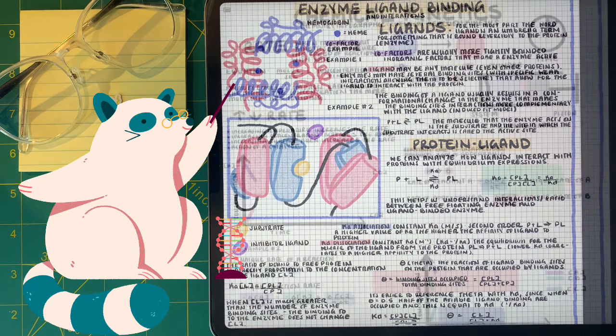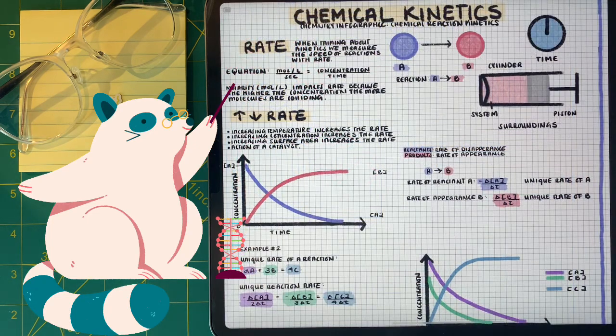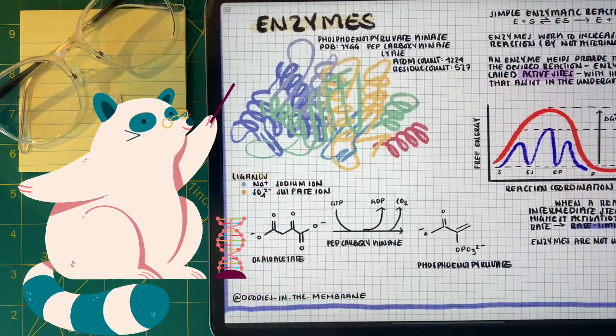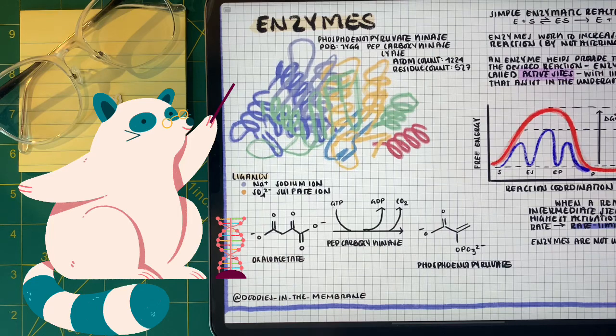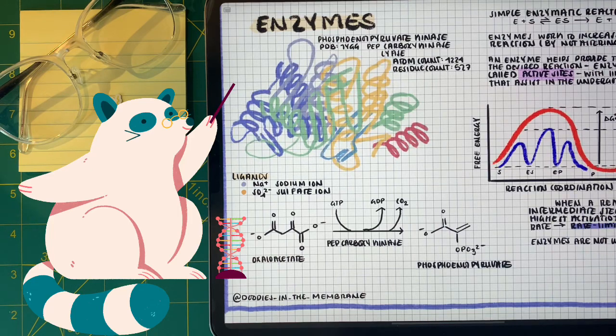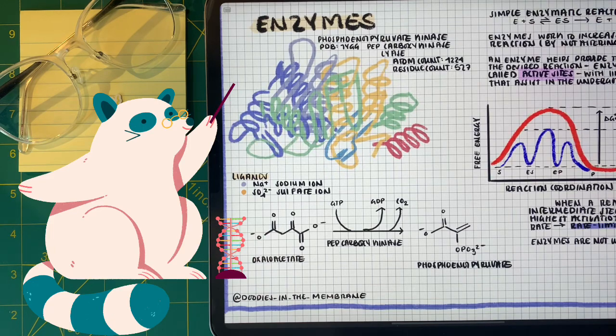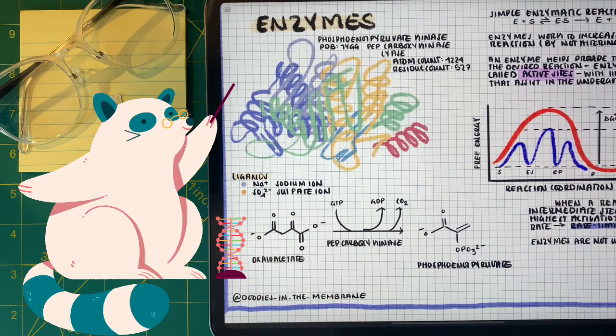You might have remembered that we mentioned enzymes very shortly when we were talking about chemical kinetics and how enzymes are a form of a catalyst, a biological catalyst, that helps speed up biochemical reactions. These biological machines work with so much efficiency that in order to describe all of their features and their kinetics, we have to break down the basics of enzymes and how they interact with ligands and substrates.